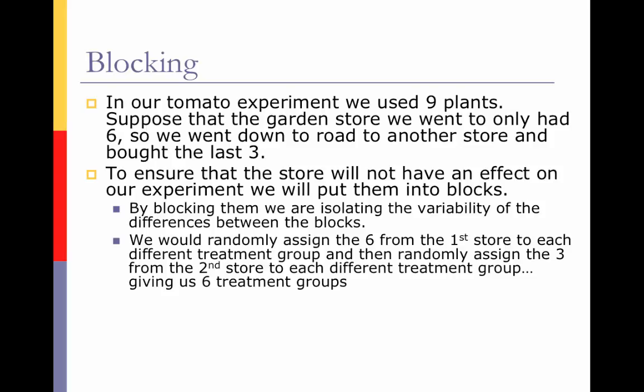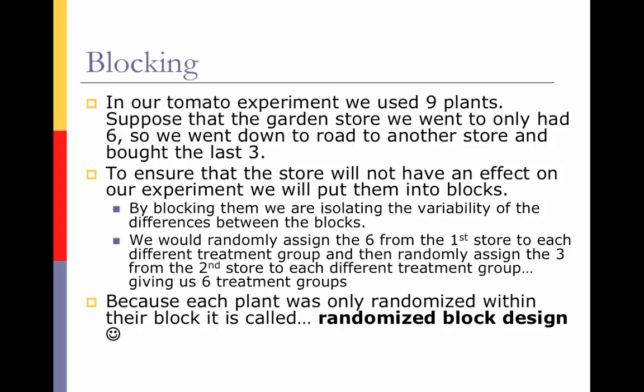The way we would do this is to randomly assign the six plants from the first store to each different treatment group, and then randomly assign the three from the second store to each different treatment group. That gives us six treatment groups. Because each plant was only randomized within their block, this type of experiment is called a randomized block design.